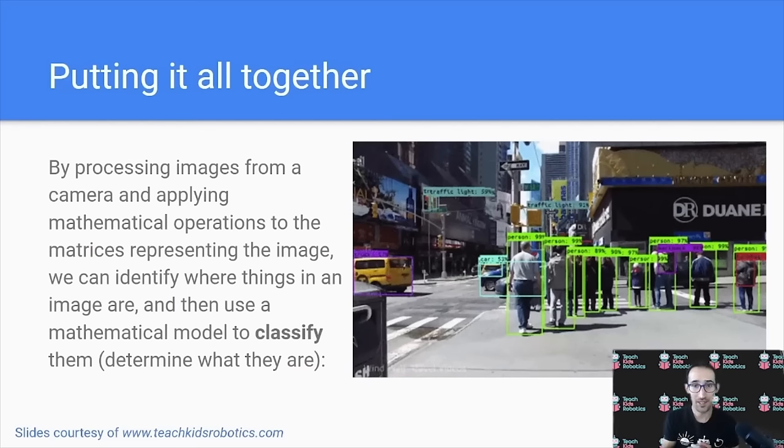Putting it all together, taking digital camera images, translating them to matrices, and performing mathematical operations on those matrices through convolutions allow us to classify, using mathematical models, what actually is in an image.